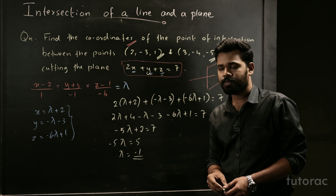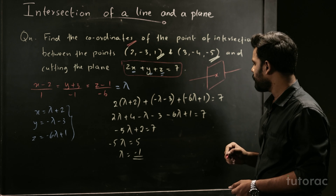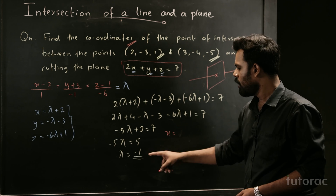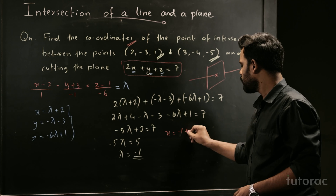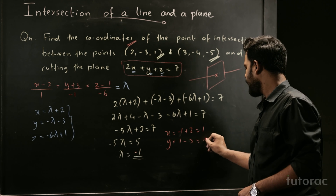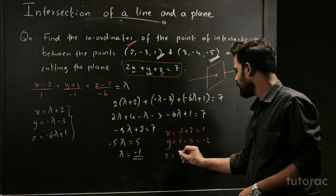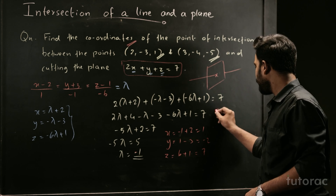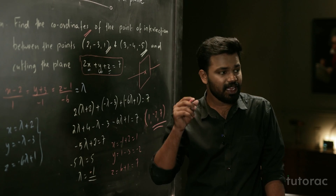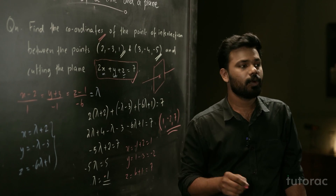Now I have the value of Lambda as negative 1. Substituting back to find the point on both the line and the plane: X equals minus 1 plus 2 equals 1. Y equals minus of (minus 1) minus 3 equals 1 minus 3 equals minus 2. Z equals minus 6 times (minus 1) plus 1 equals 6 plus 1 equals 7. So the point of intersection is (1, minus 2, 7), which is where the line joining the two given points cuts the plane 2X plus Y plus Z equals 7.